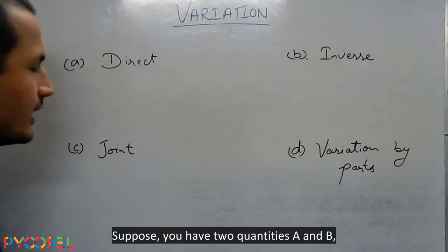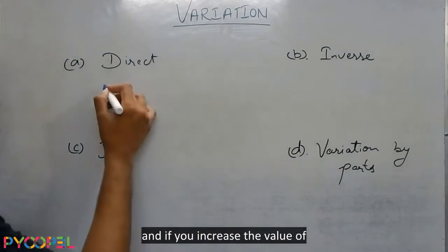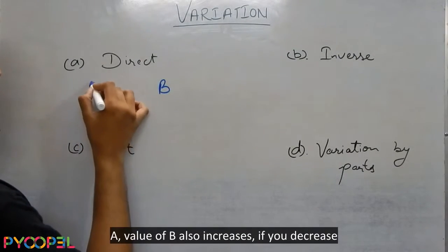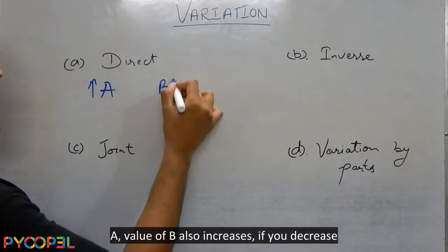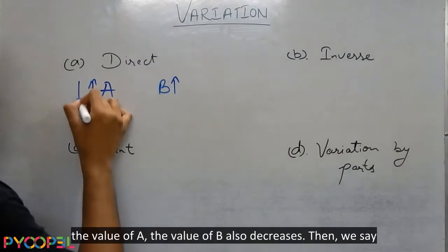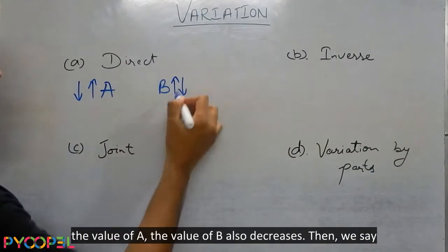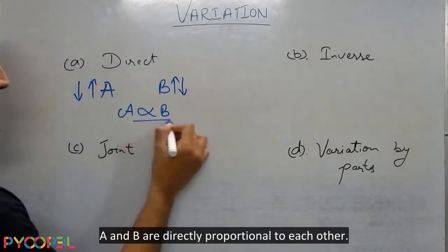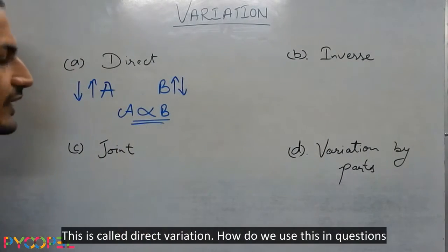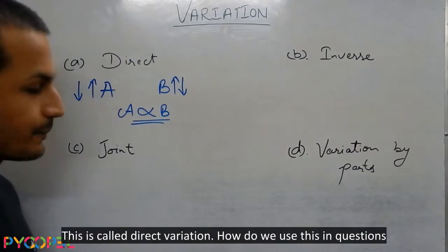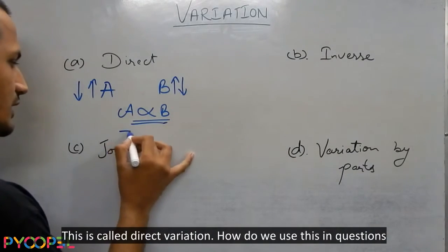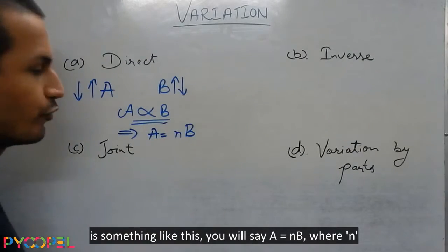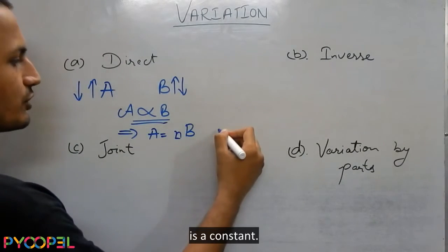Suppose you have two quantities A and B. If you increase the value of A, the value of B also increases. If you decrease the value of A, the value of B also decreases. Then we say A and B are directly proportional to each other. This is called direct variation. We write this as A = MB, where M is a constant.